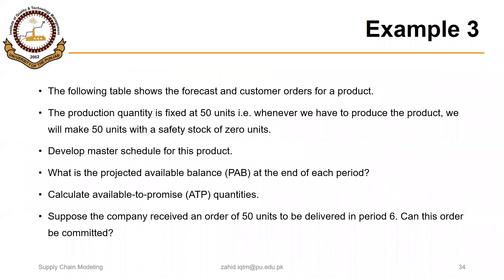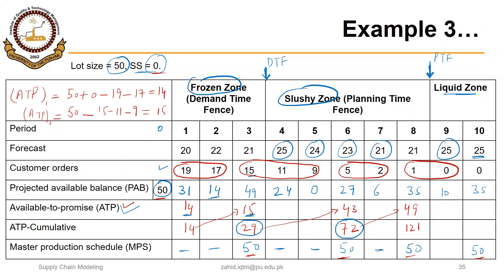For example, if a company receives an order of 50 to be delivered in period 6, can this be committed? Yes — using cumulative ATP we can commit 50 items for period 6. This is the basic benefit of ATP: salespeople can make realistic commitments to customers based on these ATP values. We will take a pause and solve the same example with some safety stock in the next segment.